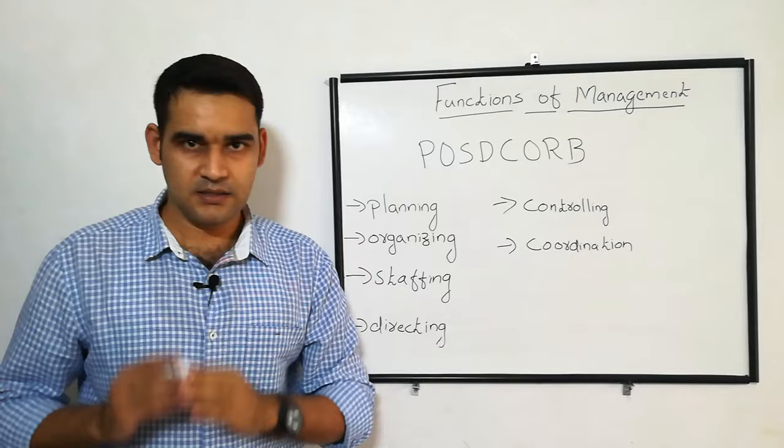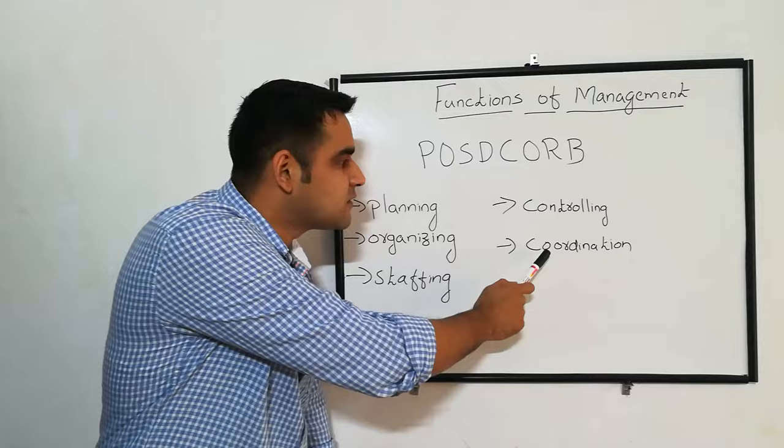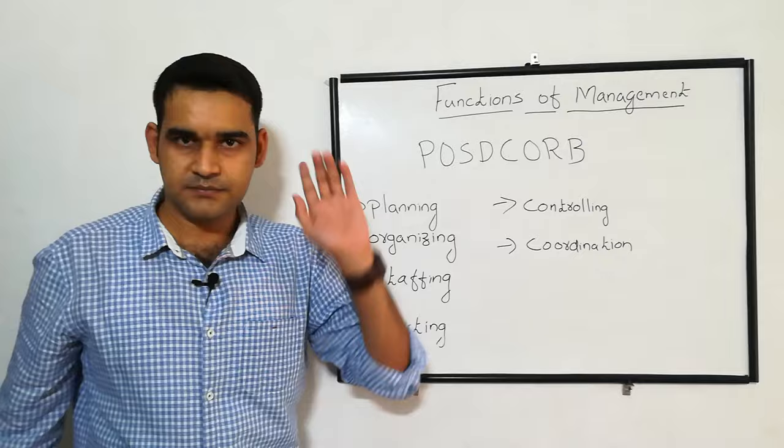So you can classify the functions of management as: planning, organizing, staffing, directing, controlling, and coordination. R and B — reporting and budgeting — come under controlling.